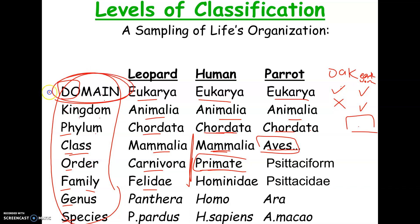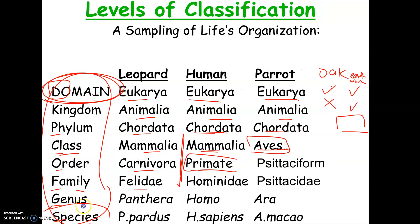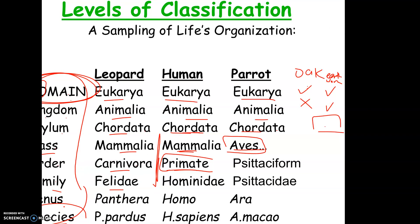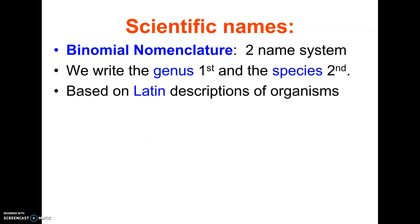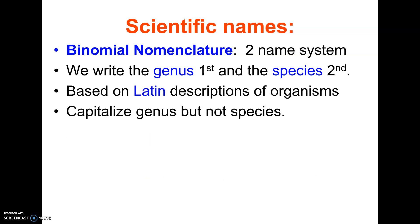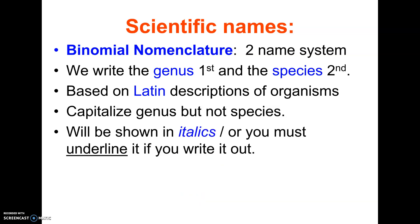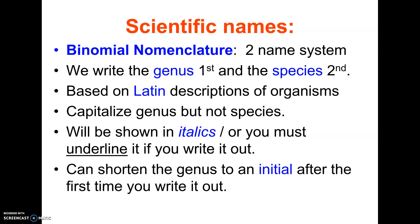Domain is the most general — there are only three domains. Species is the most specific — there are thousands of species. To be in the same species, organisms must be able to mate and produce fertile offspring. Scientific names use binomial nomenclature, a two-name system of genus and species, typically based on Latin. The genus is capitalized but the species is not. It's written in italics in a book, or underlined when handwritten. After listing it the first time — like Homo sapiens — you can abbreviate the genus to its initial.